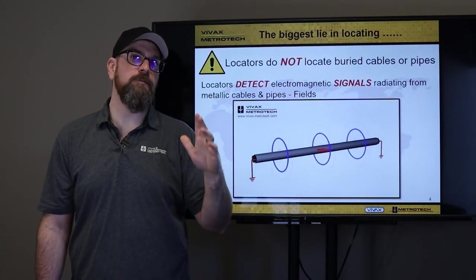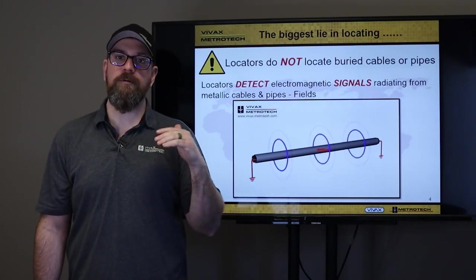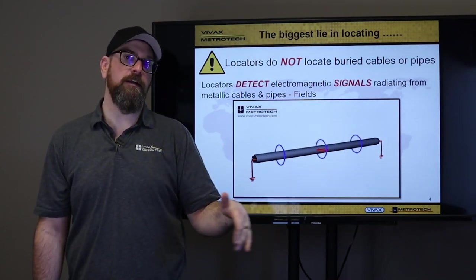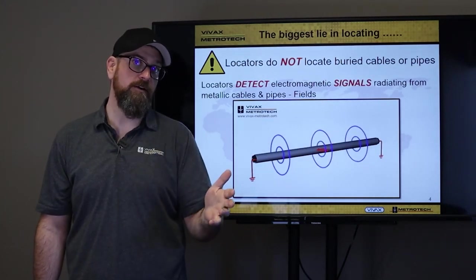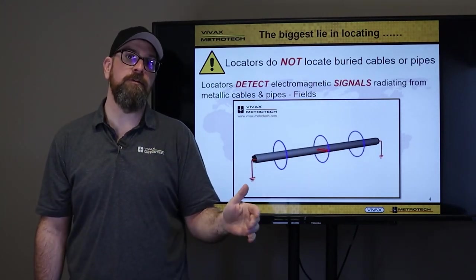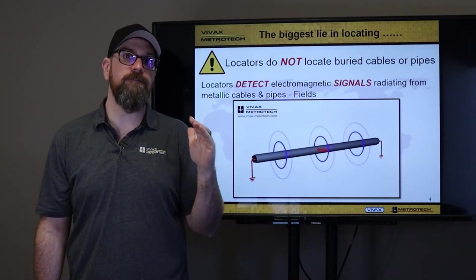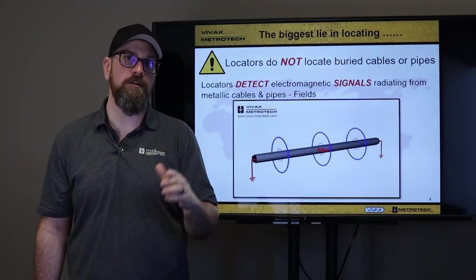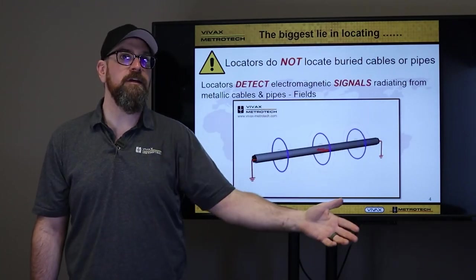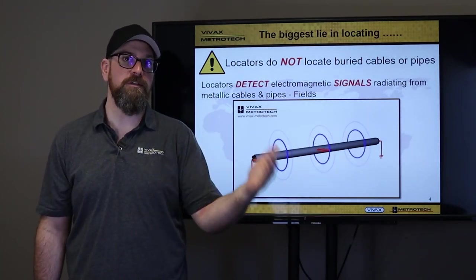So, the electromagnetic field. The common myth with utility locators, they don't actually find buried pipes, cables, and wires. A lot of people don't ever tell you that. What we're actually only finding is an electromagnetic field that we put on using our transmitter. We then go and find that electromagnetic field with our receiver.